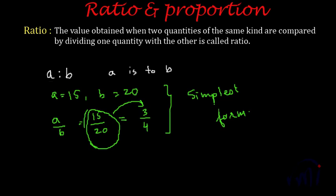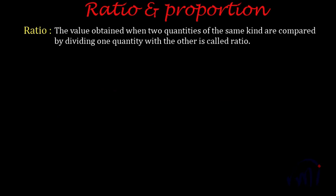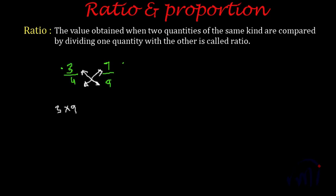If we have two ratios, how do we compare them? The method is exactly the same as comparing fractions. Suppose we have 3:4 and 7:9. Using cross multiplication: 3×9 = 27 and 7×4 = 28. Since 28 is bigger than 27, the ratio 7:9 is bigger than 3:4, or equivalently 3:4 is smaller than 7:9.